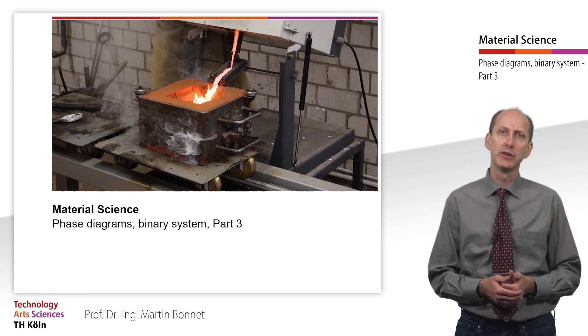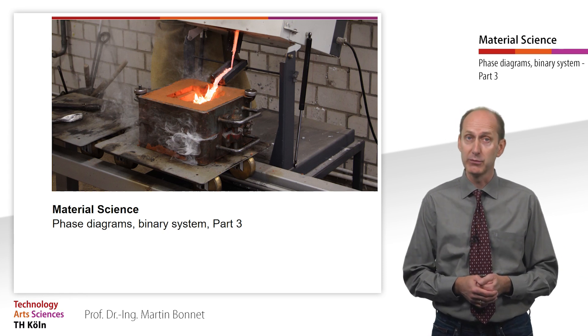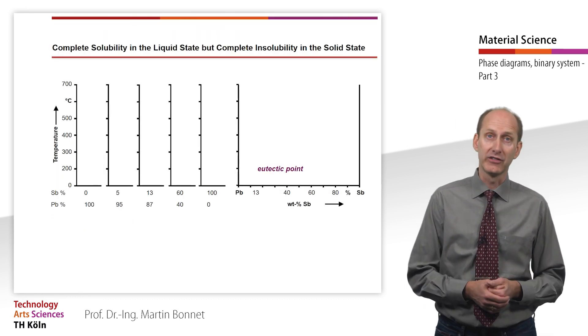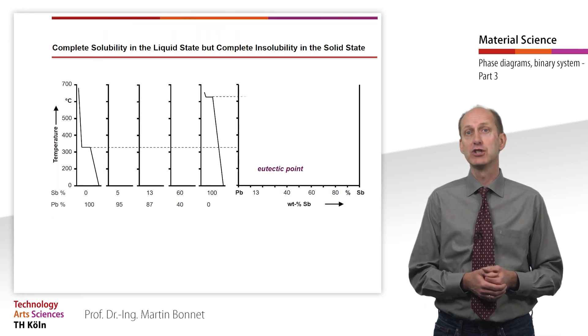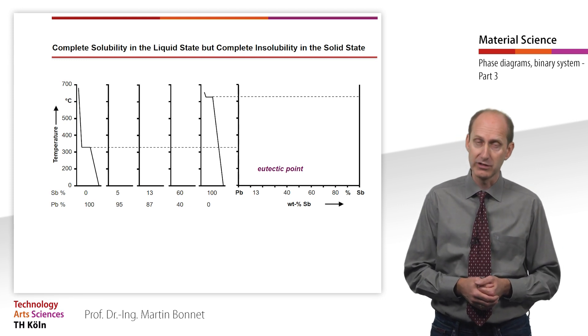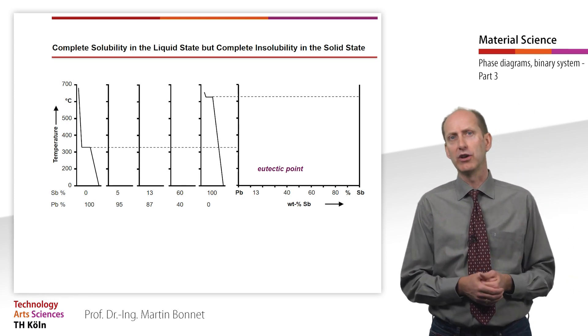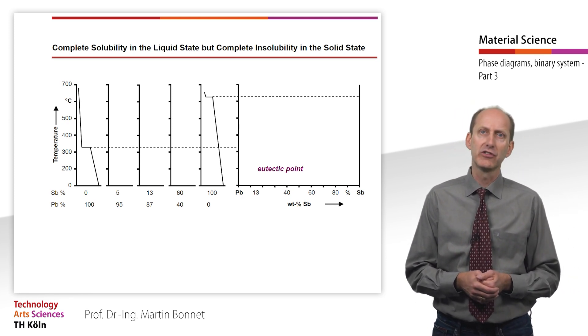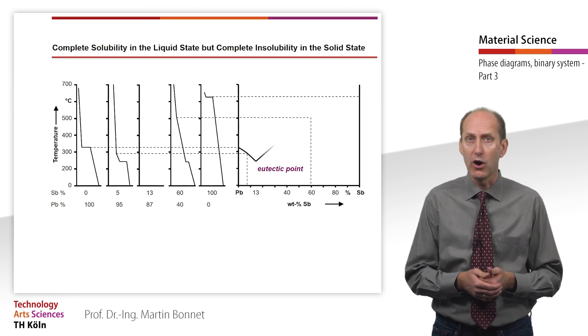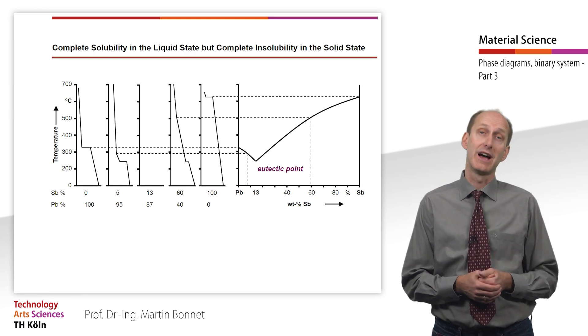One of the few systems that behaves strictly in this way is a combination of antimony and lead. In the thermal analysis, both components show the expected arrest point at their respective crystallization temperatures. However, an increasing lead or antimony content causes the liquidus temperature to decrease continuously when only the pure components lead or antimony crystallize from the melt.